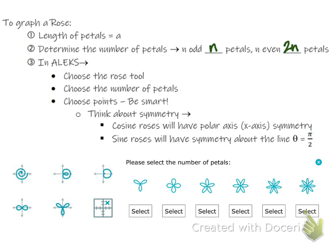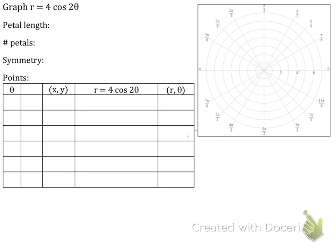To graph this in Alex, first choose the rose tool, then choose that option. This will pop up for you to choose your number of petals. Unlike the limaçons where we had four points we were definitely checking, here with two-theta petals we have to be careful with our theta values. Also think about symmetry — cosine roses will have x-axis symmetry and sine roses will have y-axis symmetry.